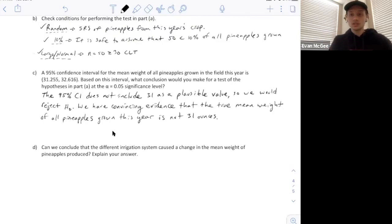If we did a one-sample t-test, we would arrive at the same result using the same sample. Finally, can we conclude that the different irrigation system caused a change in the mean weight of the pineapples produced? Explain your answer.